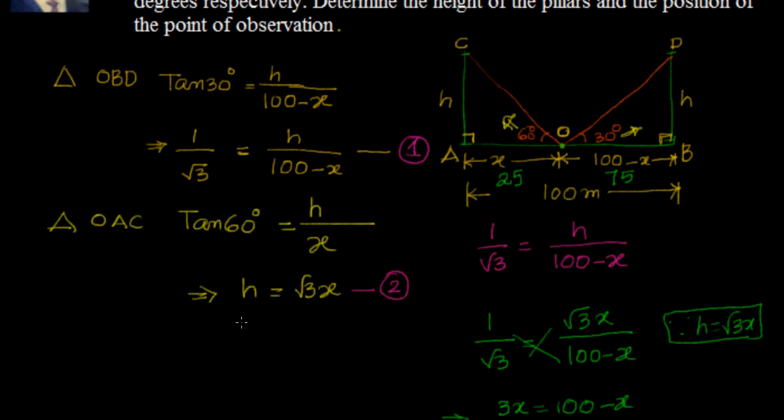But we haven't found what is h. We have equation 2, which says h is equal to root 3x. We know x equal to 25. So this becomes 25 root 3.